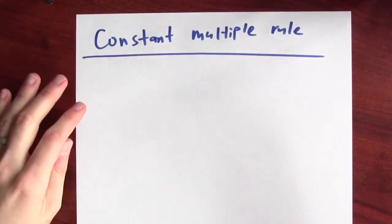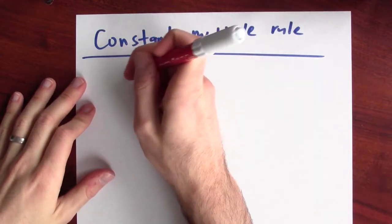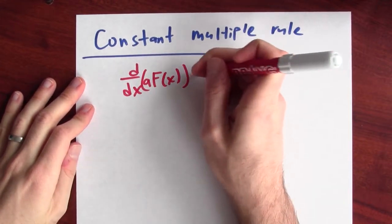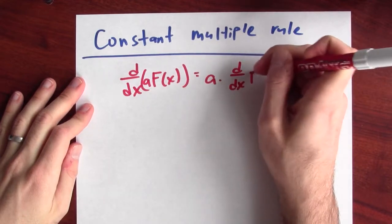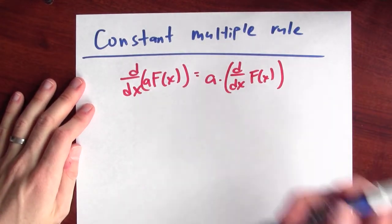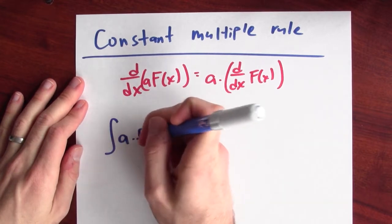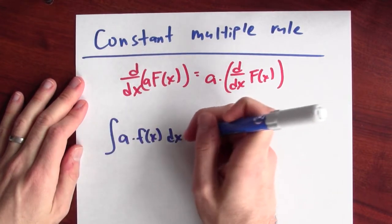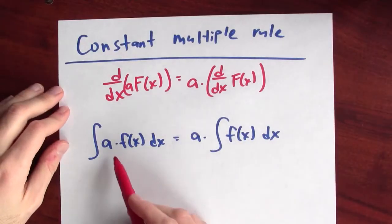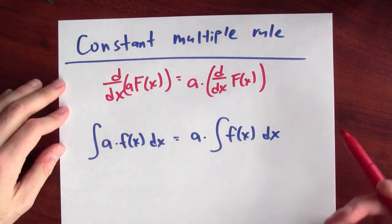Here we're using a sum rule, a power rule, and also a constant multiple rule that we haven't explicitly stated yet. So it's worth writing down that constant multiple rule. Remember what the constant multiple rule says for differentiation: the derivative of a constant a times a function big F of x is just a times the derivative of big F of x. We can write down the same kind of rule for anti-derivatives: the anti-derivative of a times little f of x equals a times the anti-derivative of f of x.